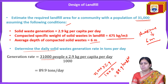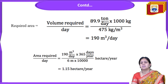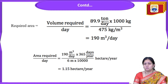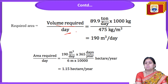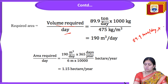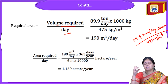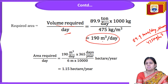In a single day we are getting approximately 90 tons of solid waste from 31,000 people. Now we will calculate how much area will be required. The required volume per day is: 89.9 tons/day × 1000 kg ÷ 475 kg per meter cube = 190 meter cube per day. So for 89.9 tons of waste per day, we need 190 m³ of compacted space per day.